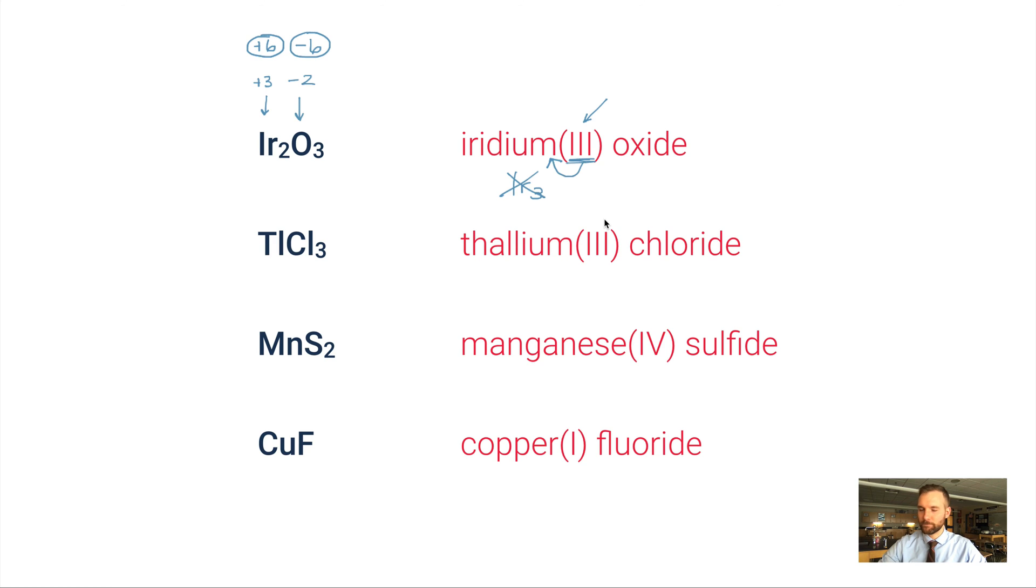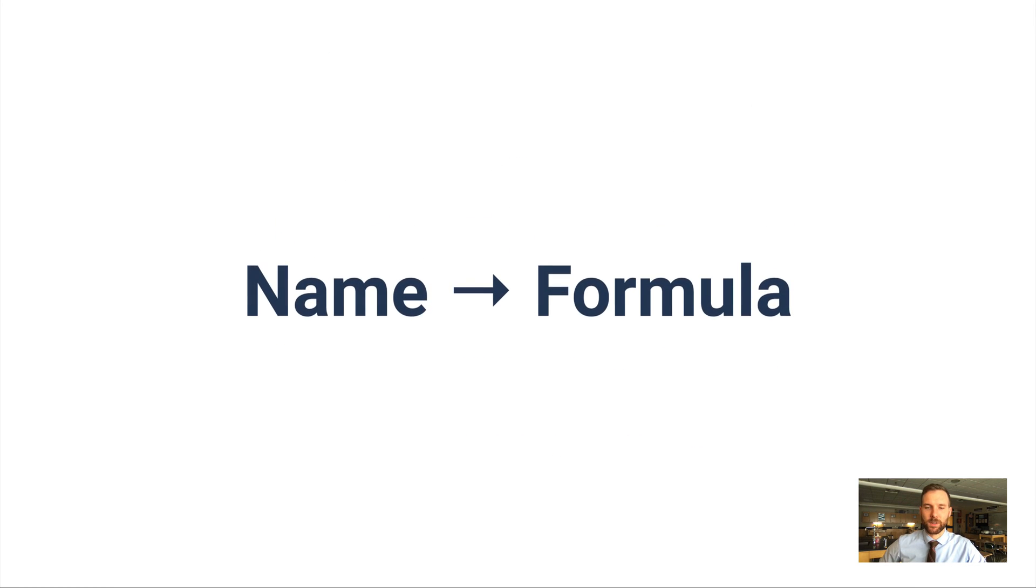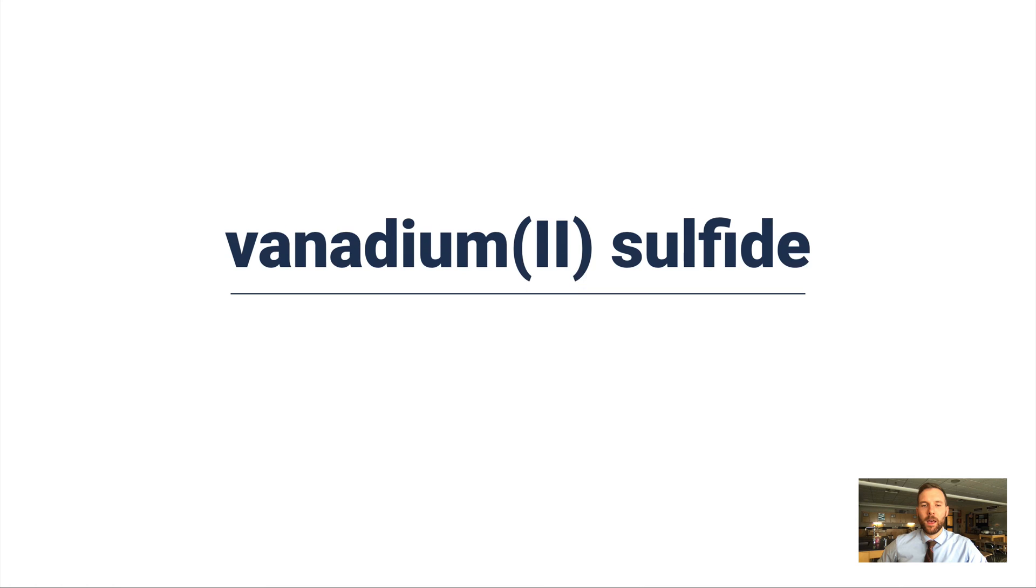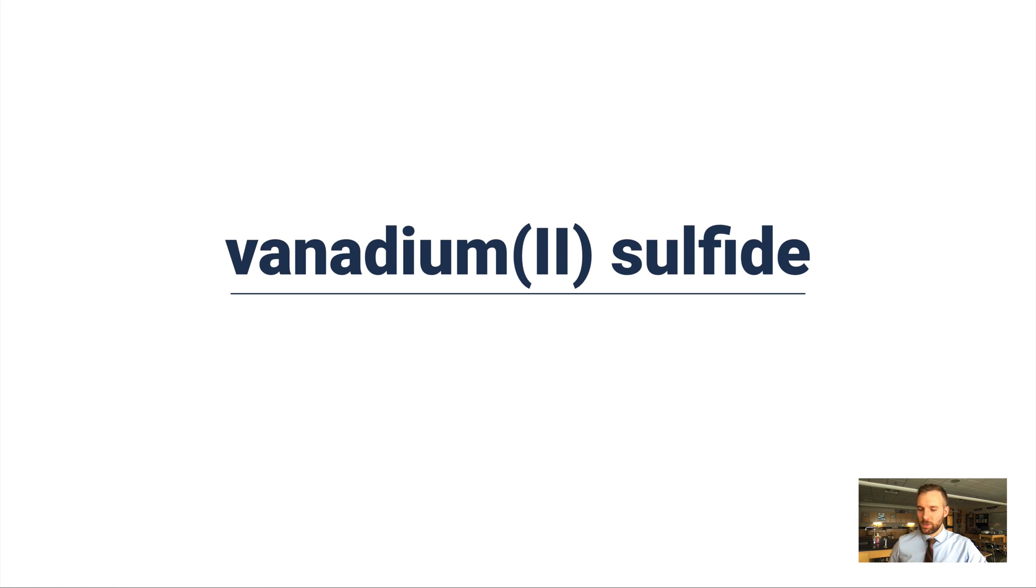Let's go in the opposite direction, from name to formula. If you're asking my opinion, I think name to formula for this type is a little easier because it gives you the charge. Vanadium(II) sulfide means I'm dealing with V²⁺, and sulfide is S²⁻. I just need one of each, so I get the formula VS.